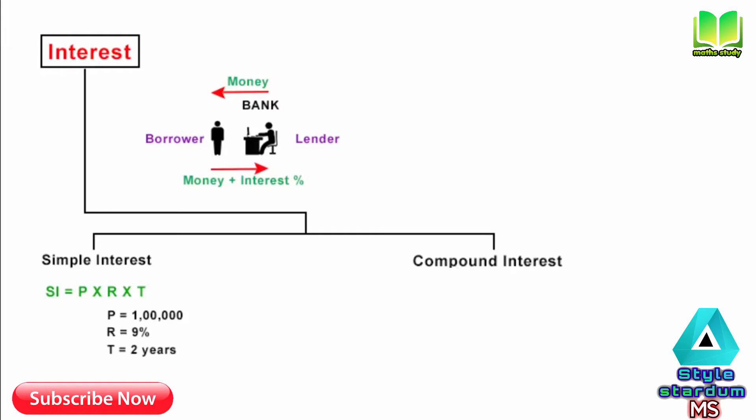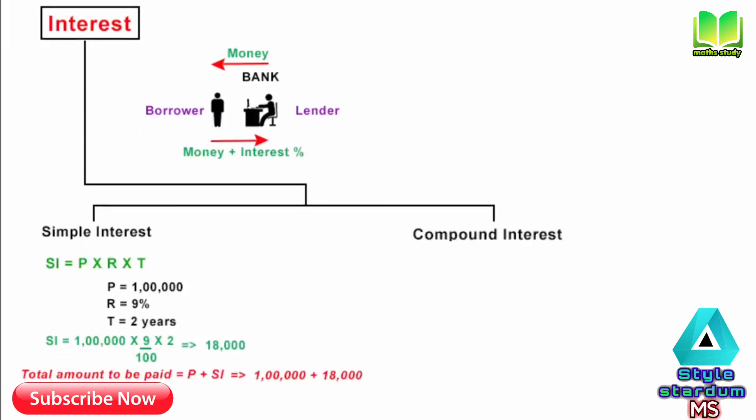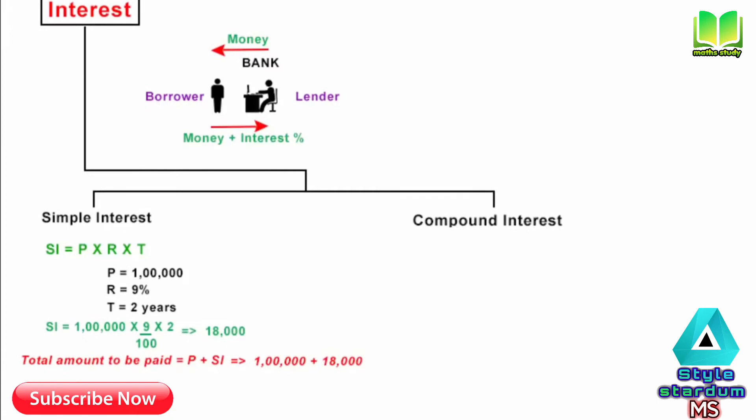Now the amount of simple interest that you have to pay is going to be 1 lakh multiplied by 9% multiplied by 2 years. That will be 18,000 rupees. So the total amount you will have to pay to the bank after 2 years would be Principal amount plus simple interest, which is equal to 1 lakh plus 18,000. That is 1 lakh 18,000 rupees.